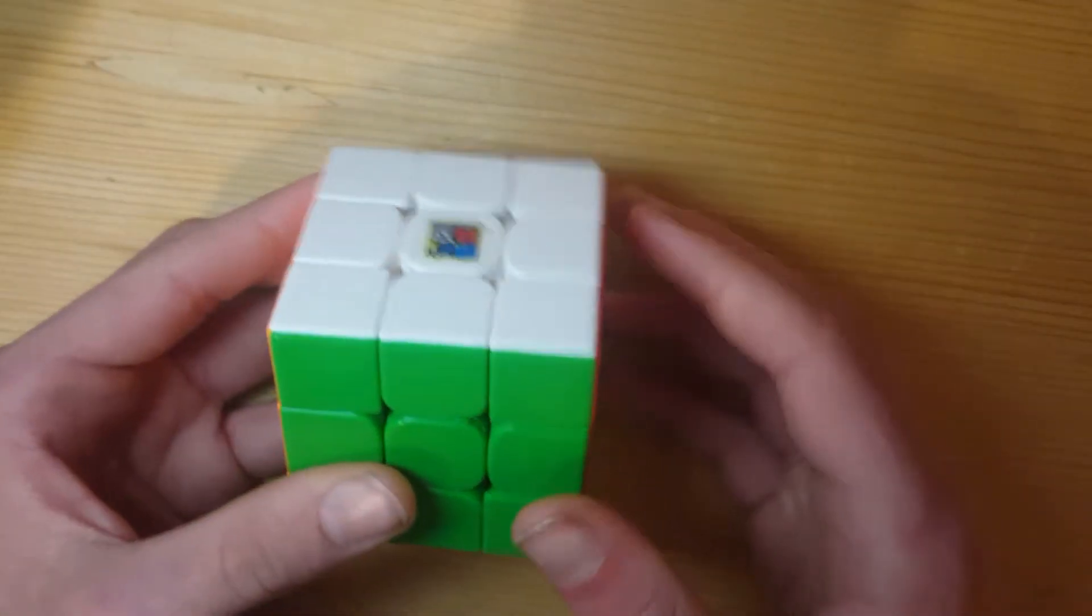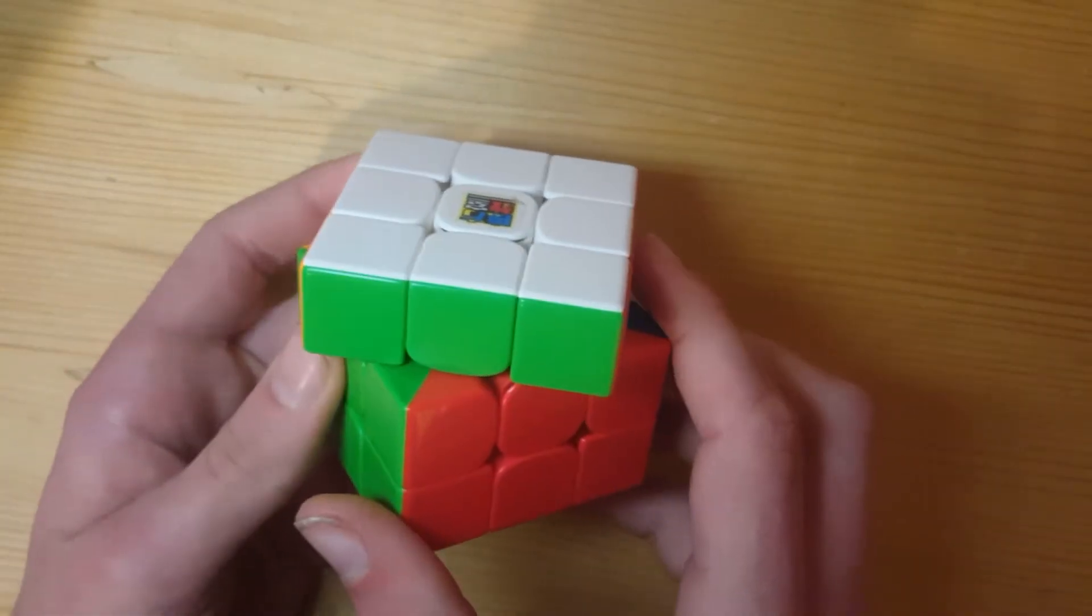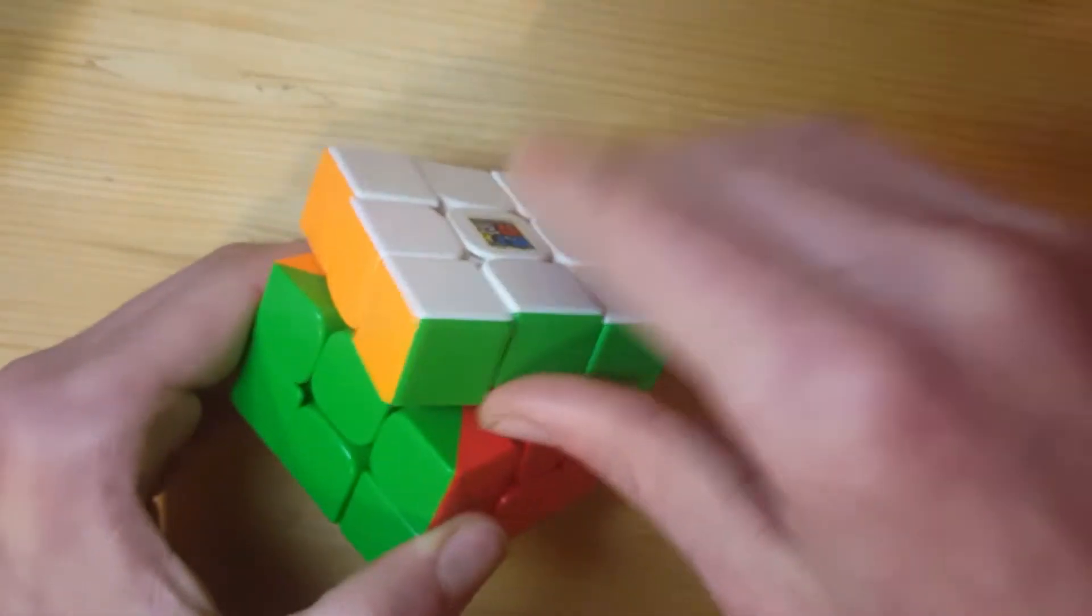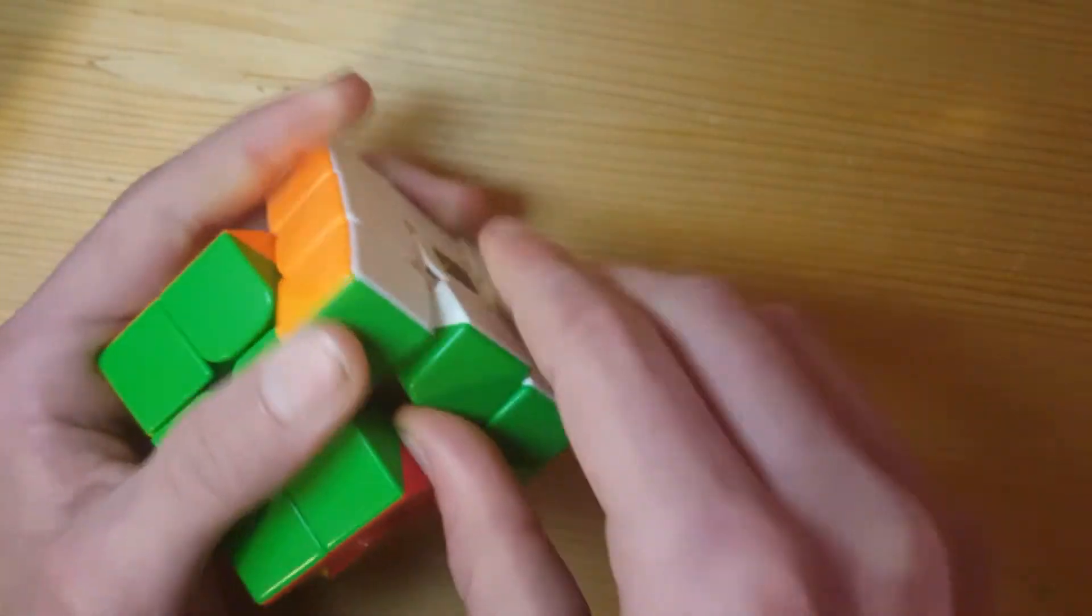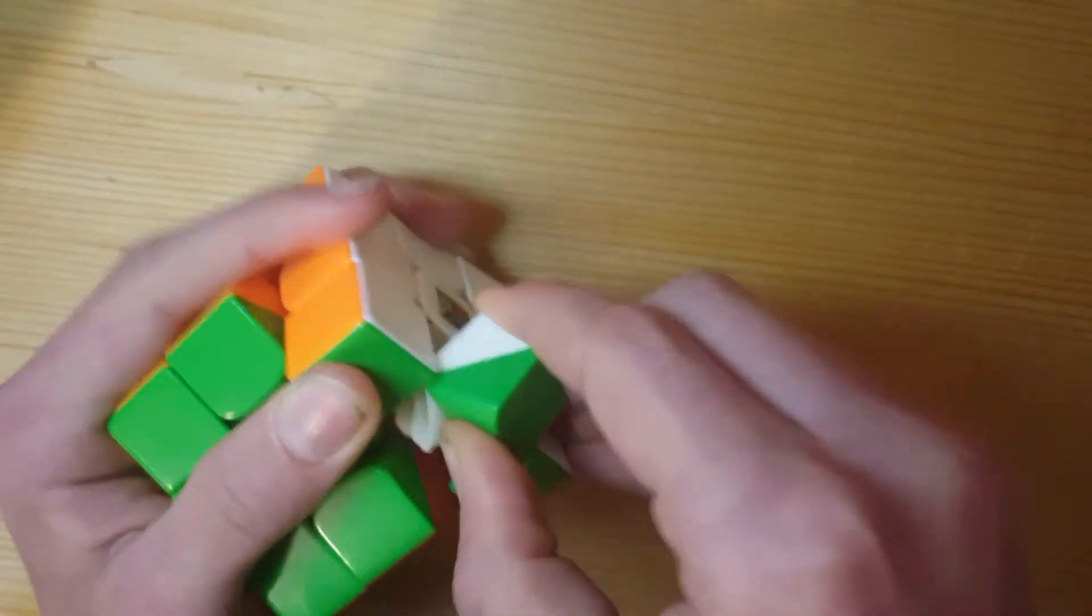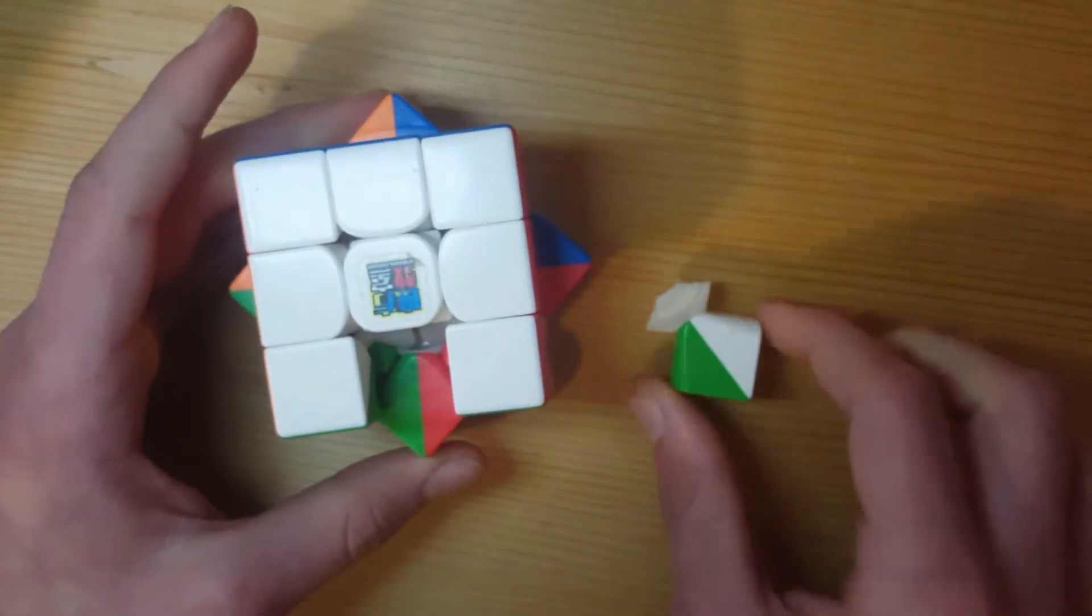So what you're gonna do is rotate the top layer 45 degrees like this and you're going to reach underneath this middle edge piece like here and pull up and twist a little bit and wiggle it out like so and it should pop out like that.